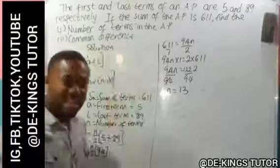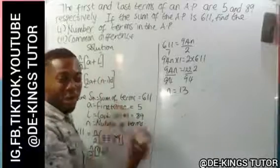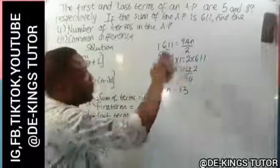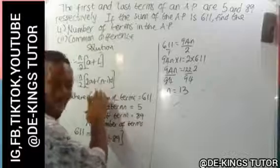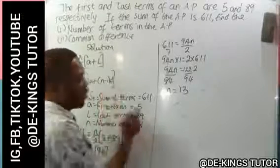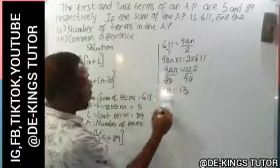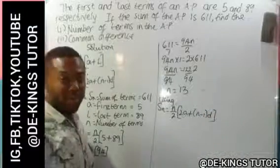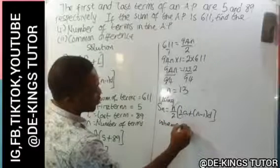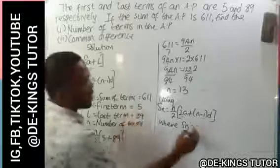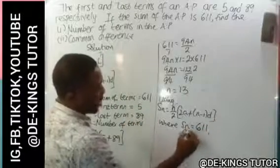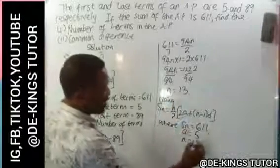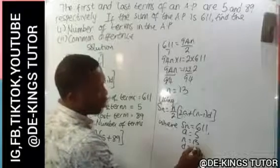Now the second part: find the common difference. In this situation, we cannot use the first formula to find the common difference because d is not in that formula. And we cannot use the sequence form directly. So we are going to use the second formula, whereby d is present: S_n = n over 2 times (2a + (n-1)d). Our S_n is 611, our first term a is 5, our n we have found as 13, and the common difference d is unknown.